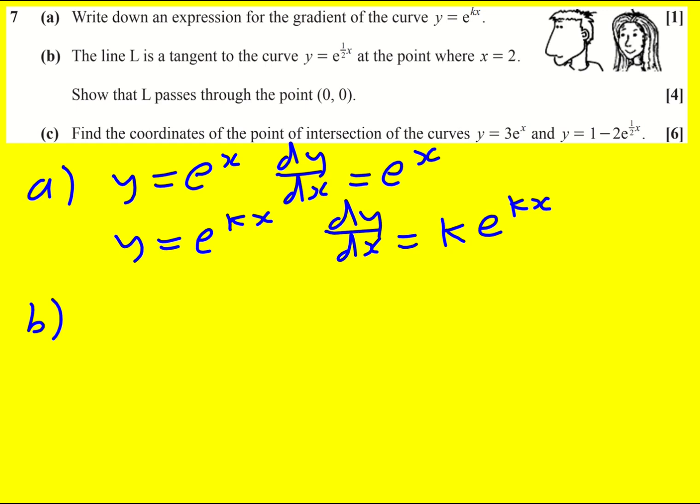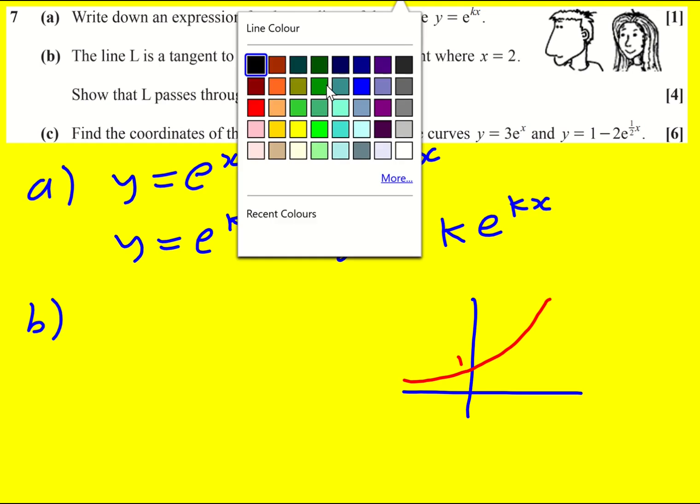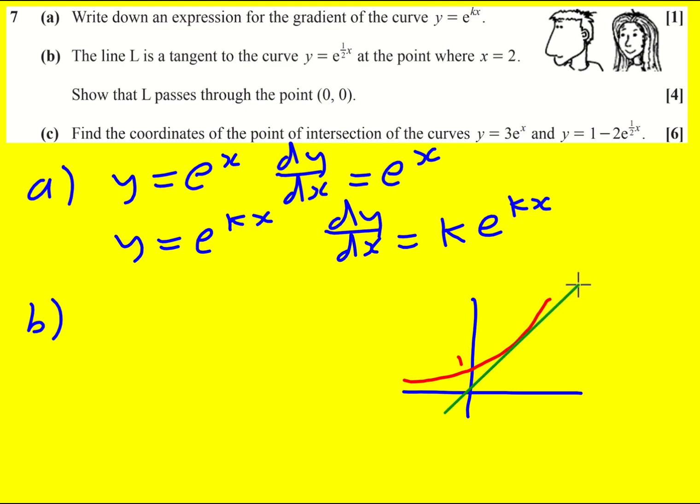Part B, we're told that line L is a tangent to this curve, y equals e to the half x, at the point where x equals 2. So I'm just going to sketch that out. All exponentials with a positive here look a bit like this, and they go through 1. But the tangent at 2 is going to look a little bit like this. It just glances off the curve at the point x equals 2.